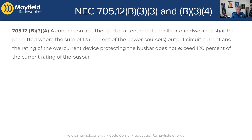The other code section we're going to talk about is B34, which is all about center fed panel boards. This is specific to dwellings, and in certain parts of the country there are a lot of center fed panel boards. This code section came about because AHJs — authorities having jurisdiction — and inspectors weren't quite sure how to deal with center fed panel boards. This code section is kind of going back to the 120% rule that we talked about in B32.